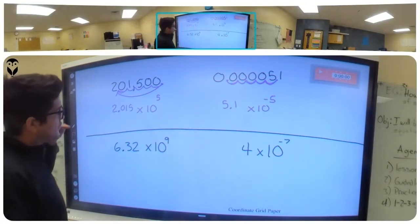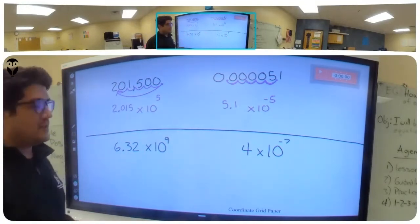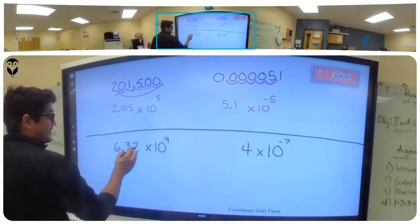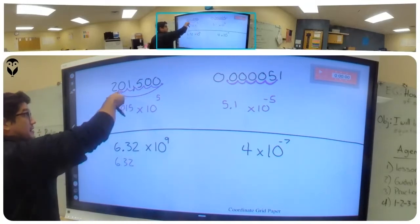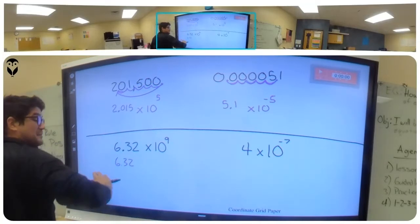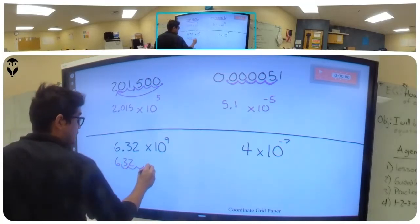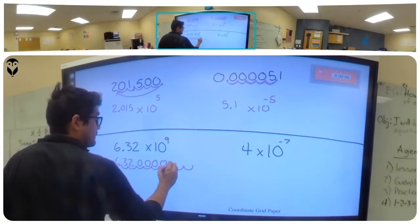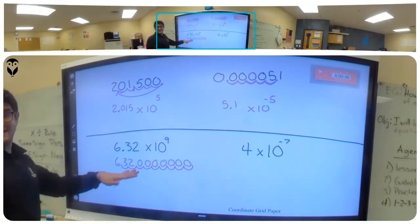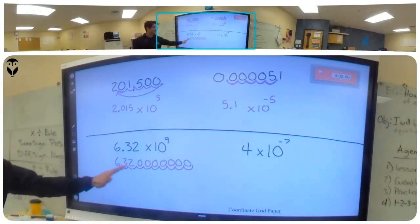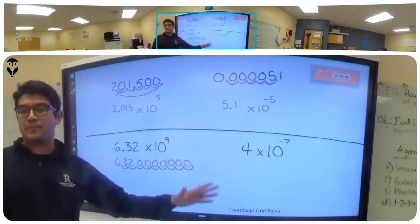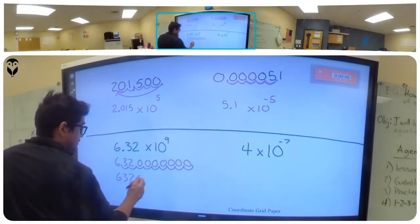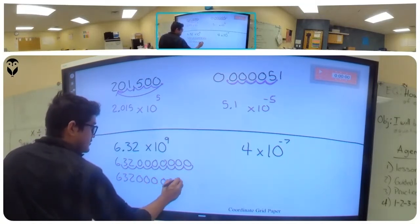Now we're converting scientific notation into standard form. Here's 6.32 — the decimal point is going to move nine times, making it bigger, because it's a positive exponent. So we move one, two, three, four, five, six, seven, eight, nine places. If you leave your answer with two decimal points, that's wrong. The correct answer is 6,320,000,000 — six, three, two, followed by seven zeros.